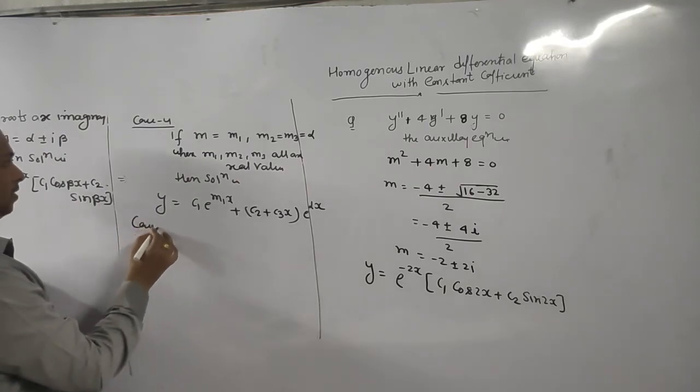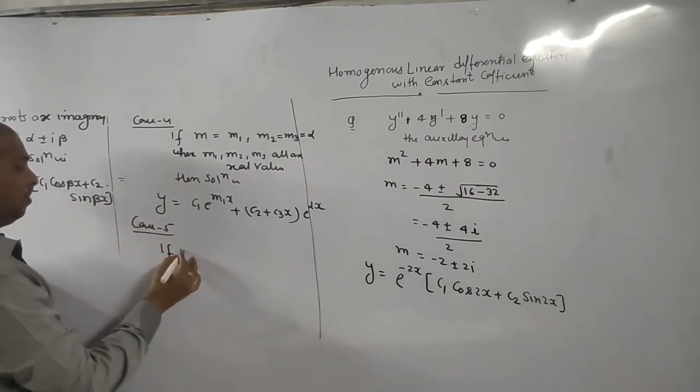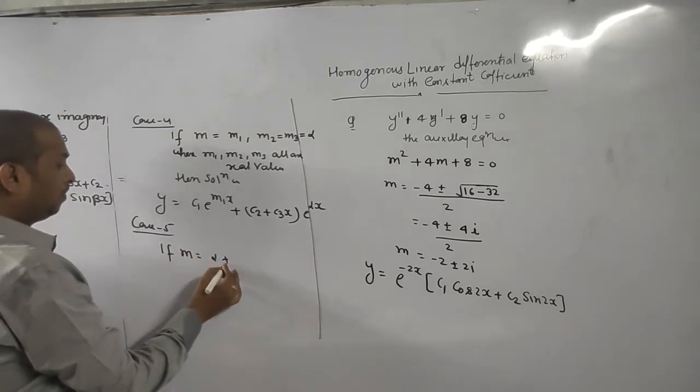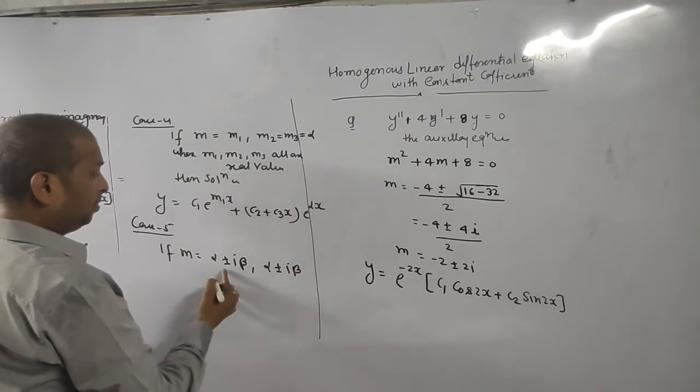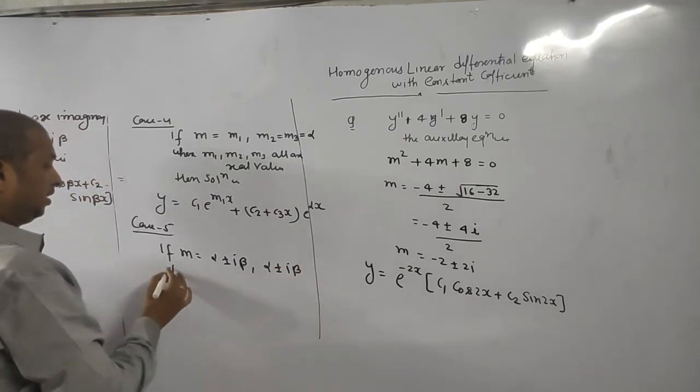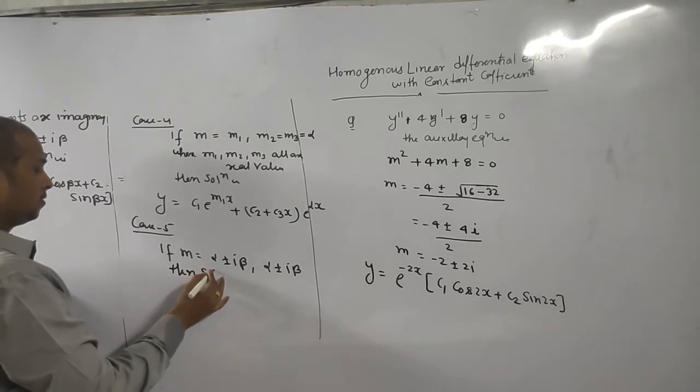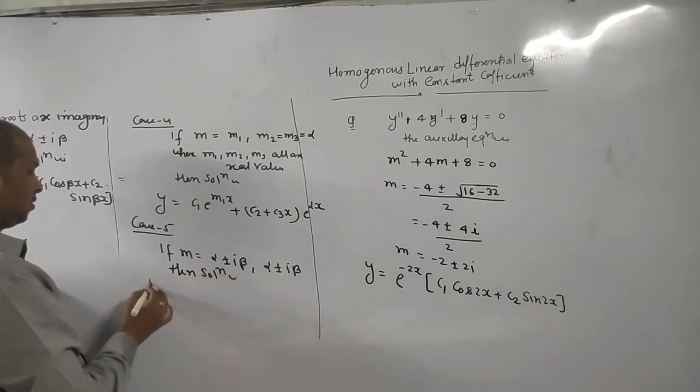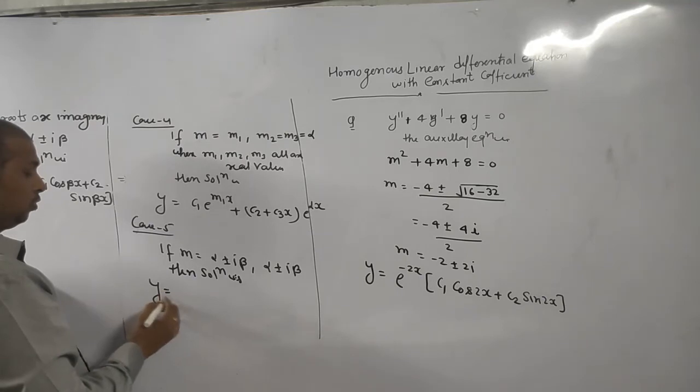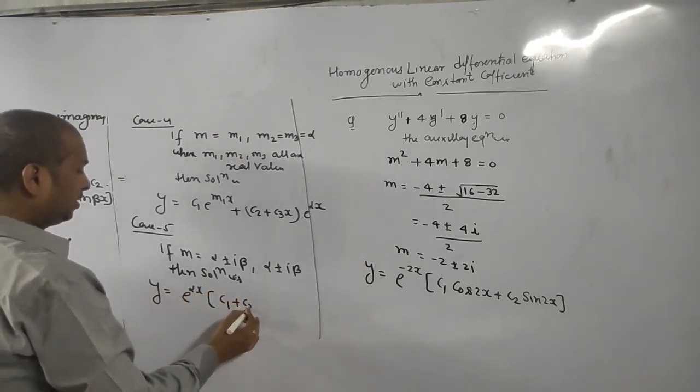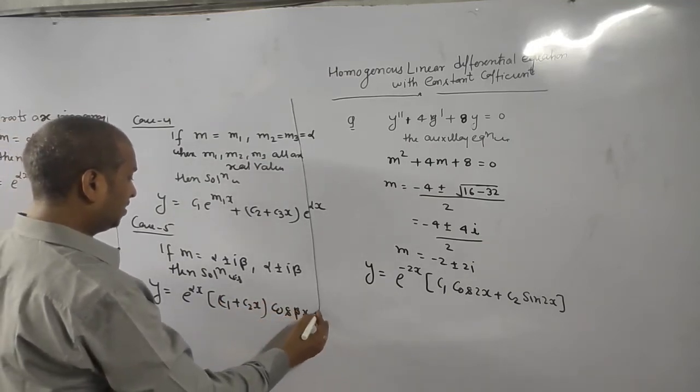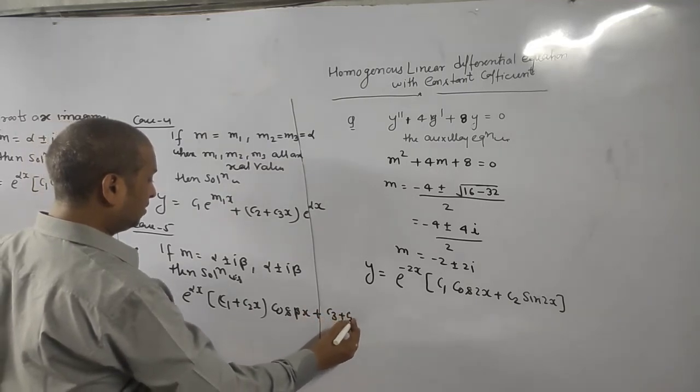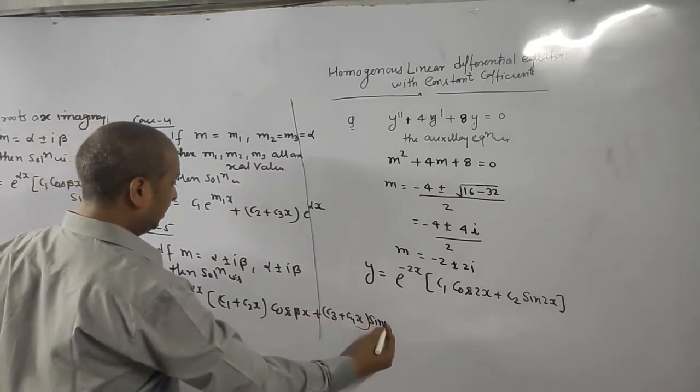What is case fifth? If m is equal to alpha plus minus iota beta, comma alpha plus minus iota beta. Means imaginary roots comes in pair. Then solution is y is equal to e to the power alpha x times (c1 plus c2x) cos beta x plus (c3 plus c4x) sin beta x.